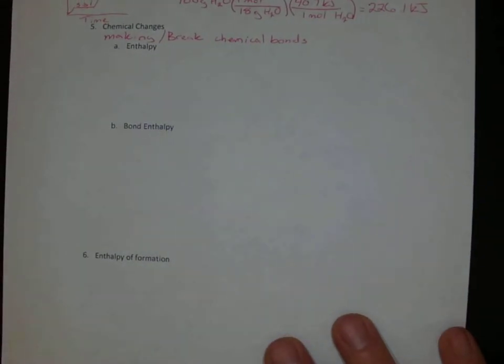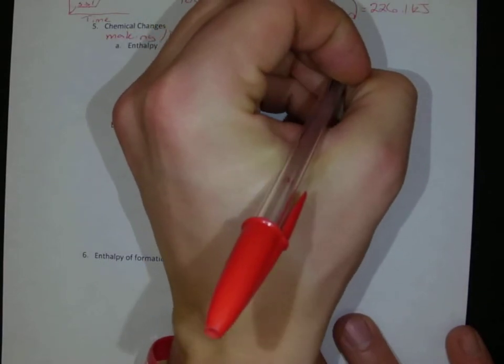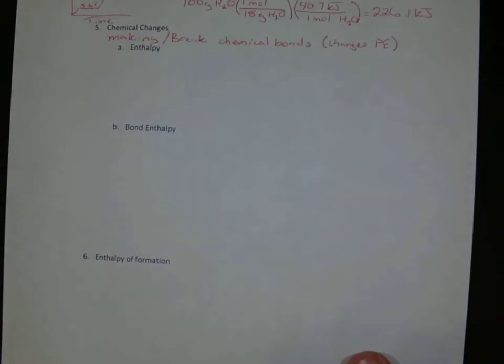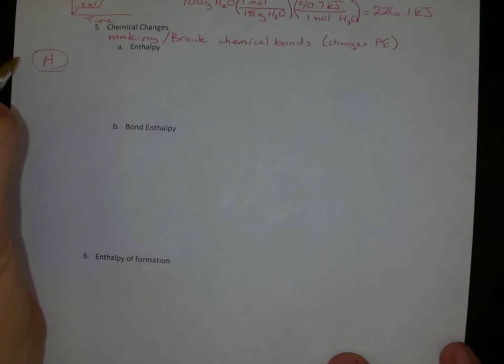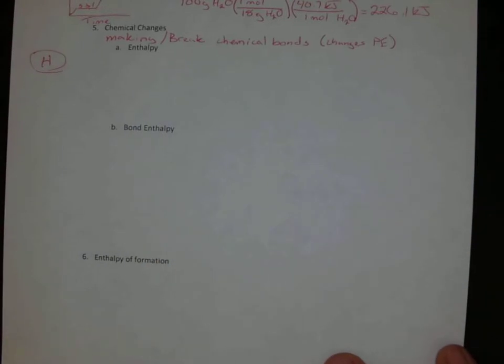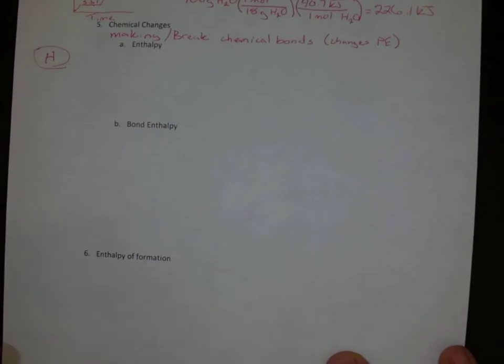It, of course, changes our potential energy, because those chemical bonds are potential energy. So our enthalpy, our enthalpy is H. H is the enthalpy. The change in enthalpy is directly proportional to the amount of reactant in our product.